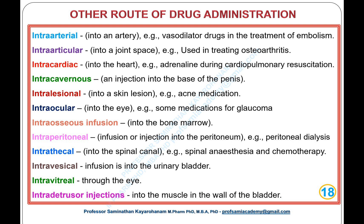Further specialized routes: intra-ocular — into the eye, for example medications for glaucoma; intra-osseous infusion — into the bone marrow; intra-peritoneal — infusion or injection into the peritoneum, for example peritoneal dialysis; intra-thecal — into the spinal canal, for example spinal anaesthesia and chemotherapy; intra-vesical — infusion into the urinary bladder; intra-vitreal — through the eye; intra-detrusor injections — into the muscle in the wall of the bladder.